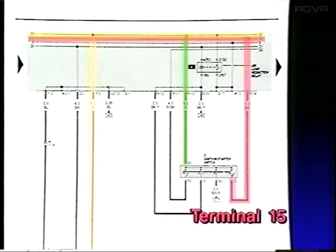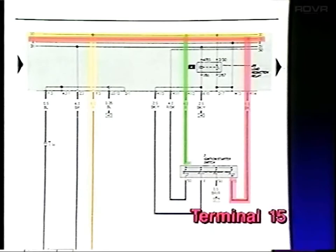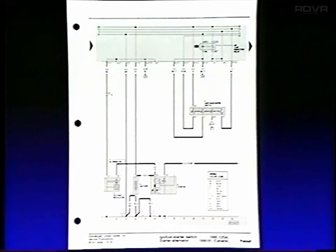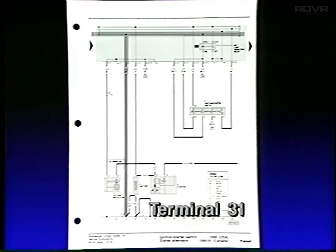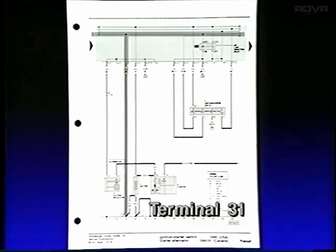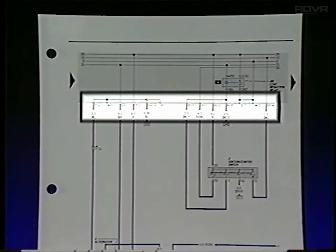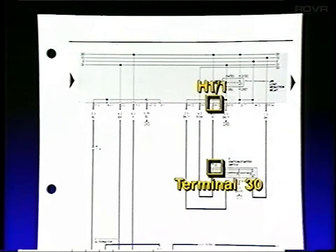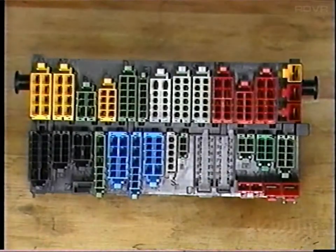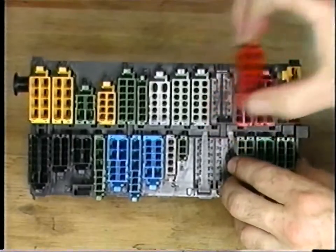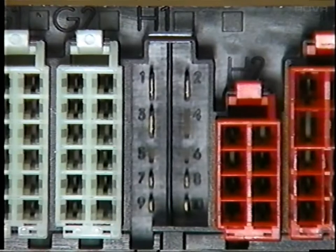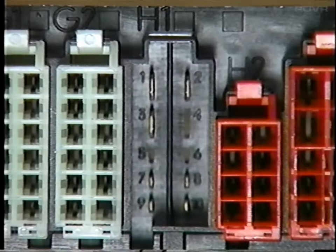From there, the ignition switch will supply the terminal number 15 circuit inside the relay panel, which is powered whenever the ignition switch is in the on or start position. Terminal number 31 is a ground circuit connected directly to the vehicle body, supplying a ground connection for the relays in the fuse relay panel. The terminals going into and out of the fuse relay panel are identified by letters and numbers. For example, terminal 30 is identified as H1/1, meaning terminal block H1, cavity number 1.